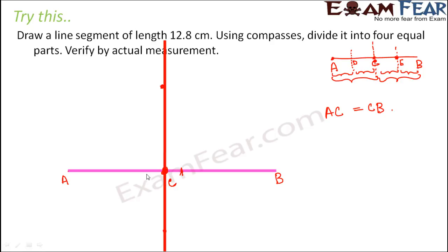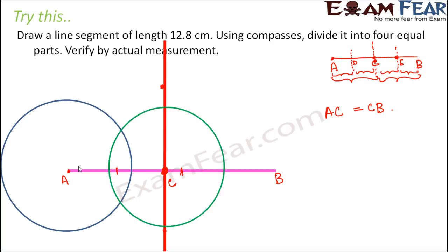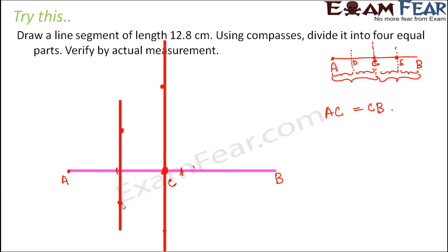Now let's draw a perpendicular bisector of AC. Take the compass with A as the center and radius slightly greater than the midpoint of AC. Draw a circle. Similarly, considering C as the center with radius slightly greater than half the length of AC, draw another circle. These two circles intersect at two points — join them to get the perpendicular bisector of AC. This gives us point D, so AD is equal to DC.